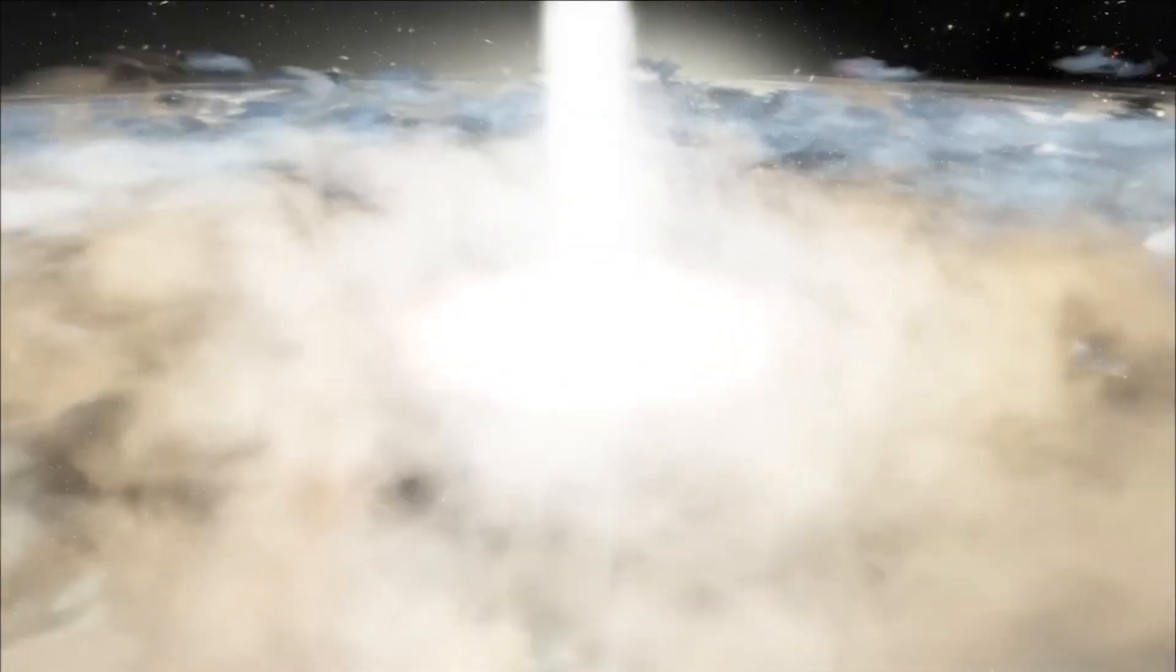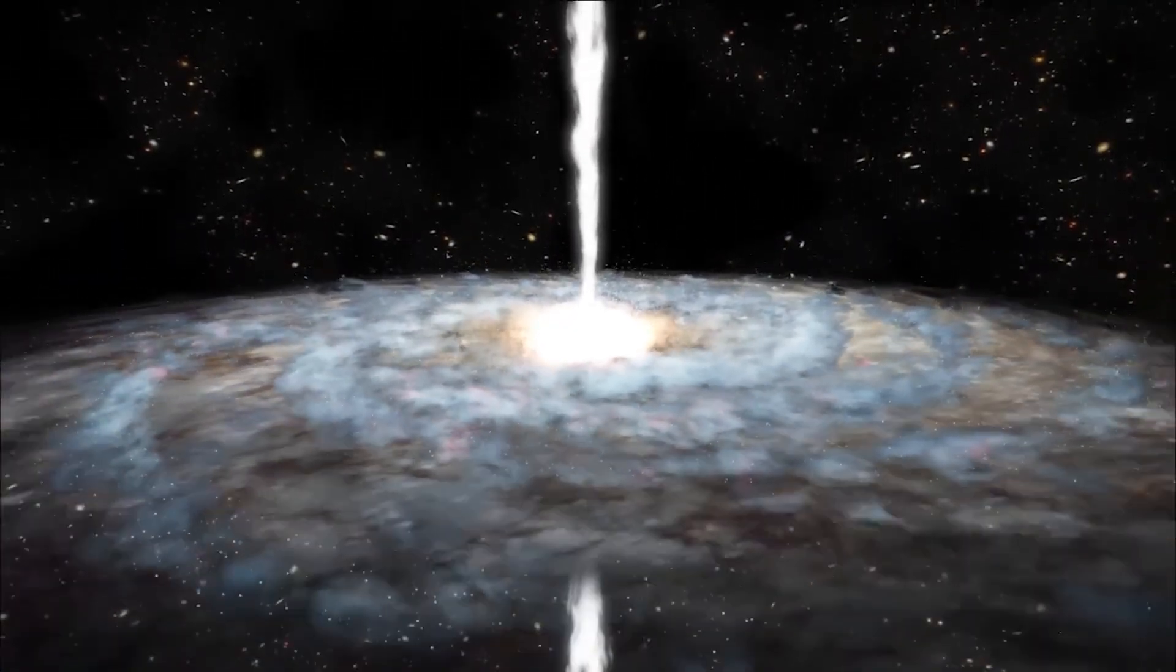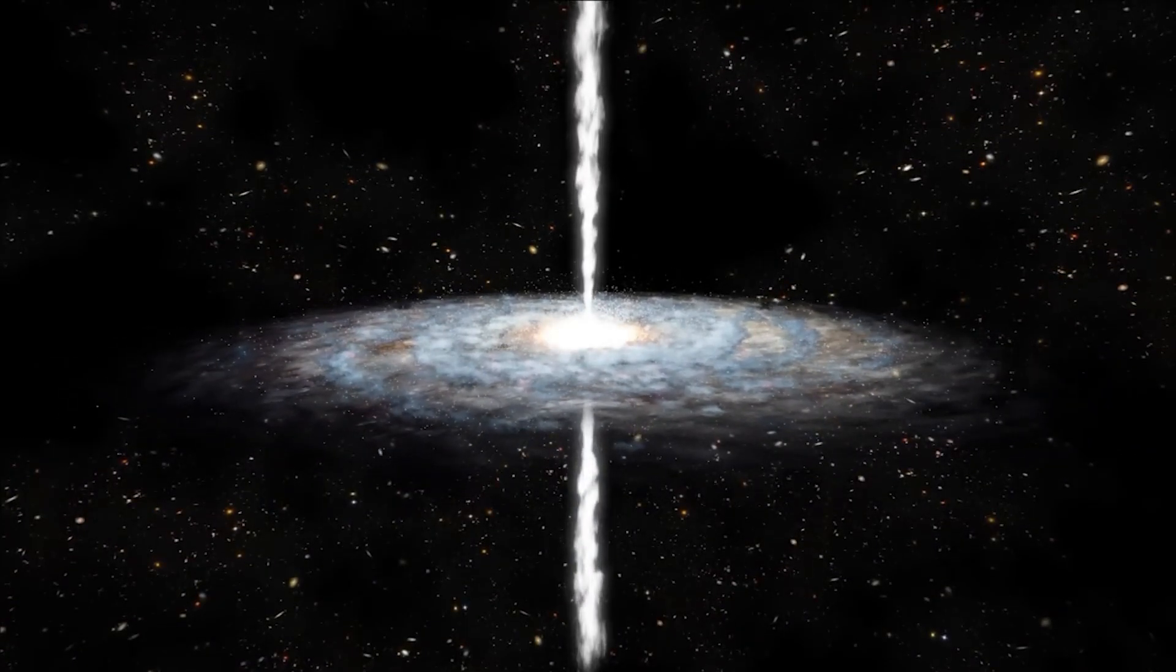Some scientists have proposed the idea of a wormhole connecting a black hole and a white hole, suggesting that they could be different manifestations of a unified phenomenon. According to this idea, matter falling into a black hole could emerge from a white hole in a different region of space-time or even another universe.